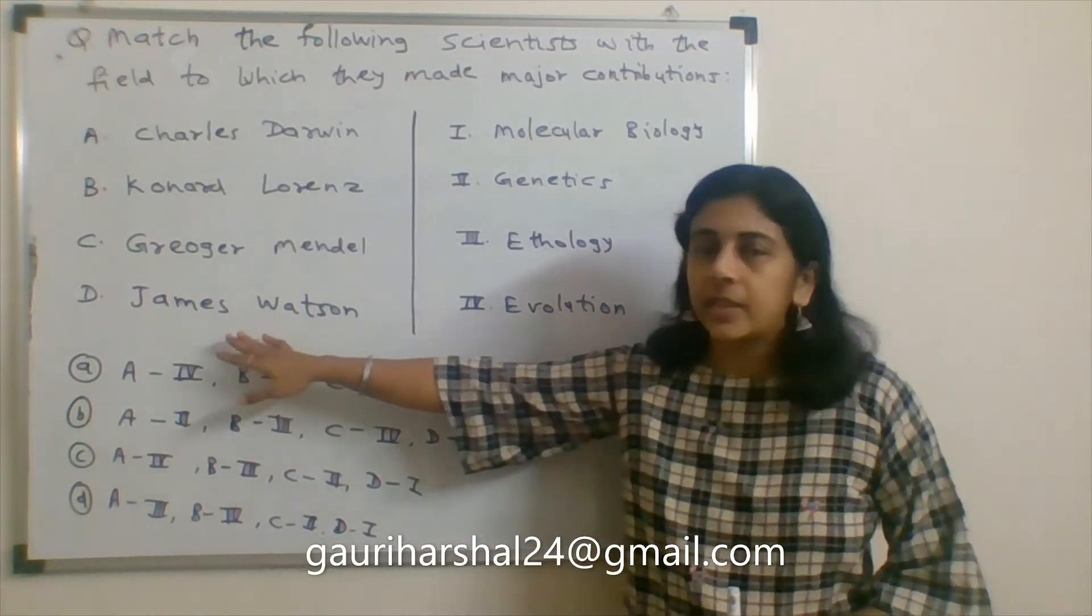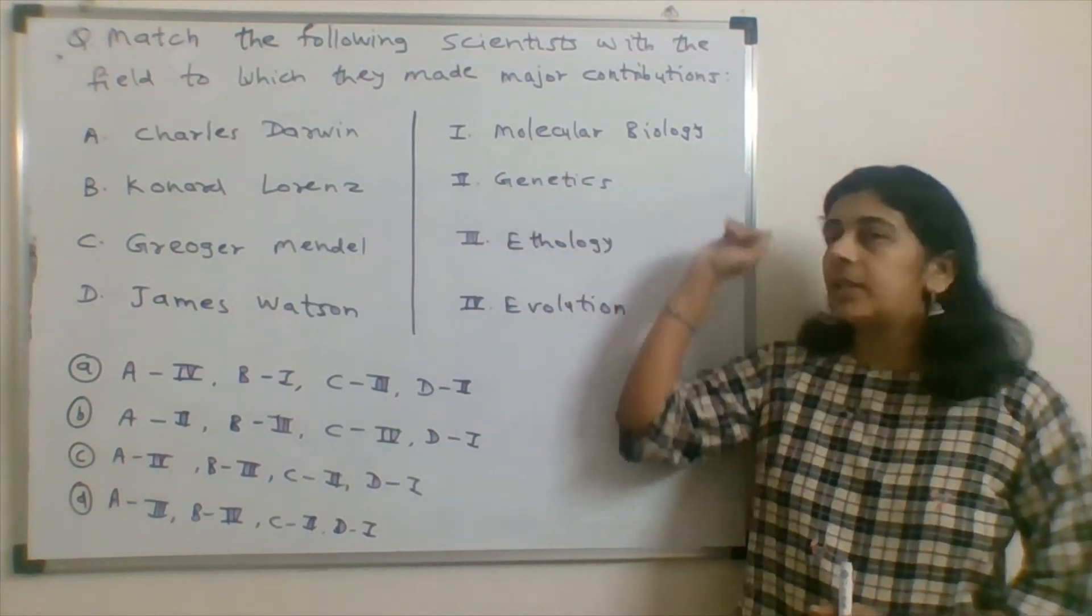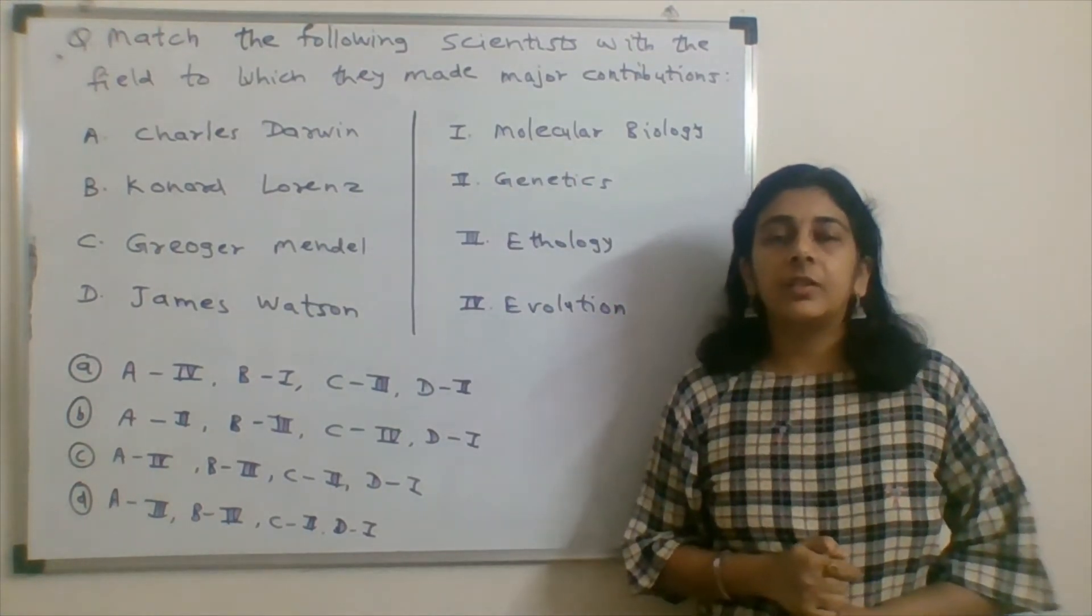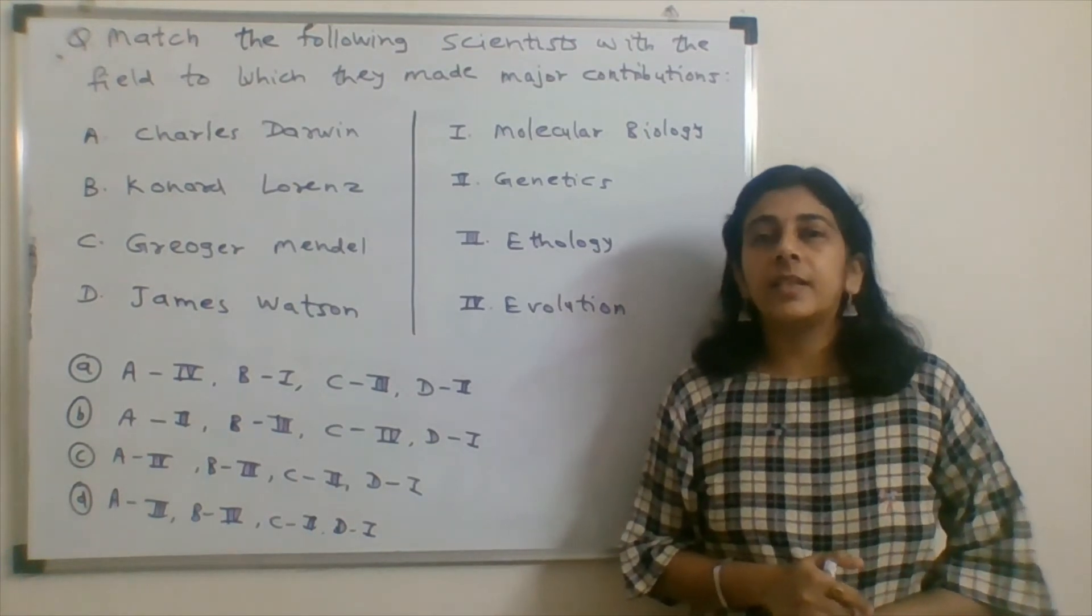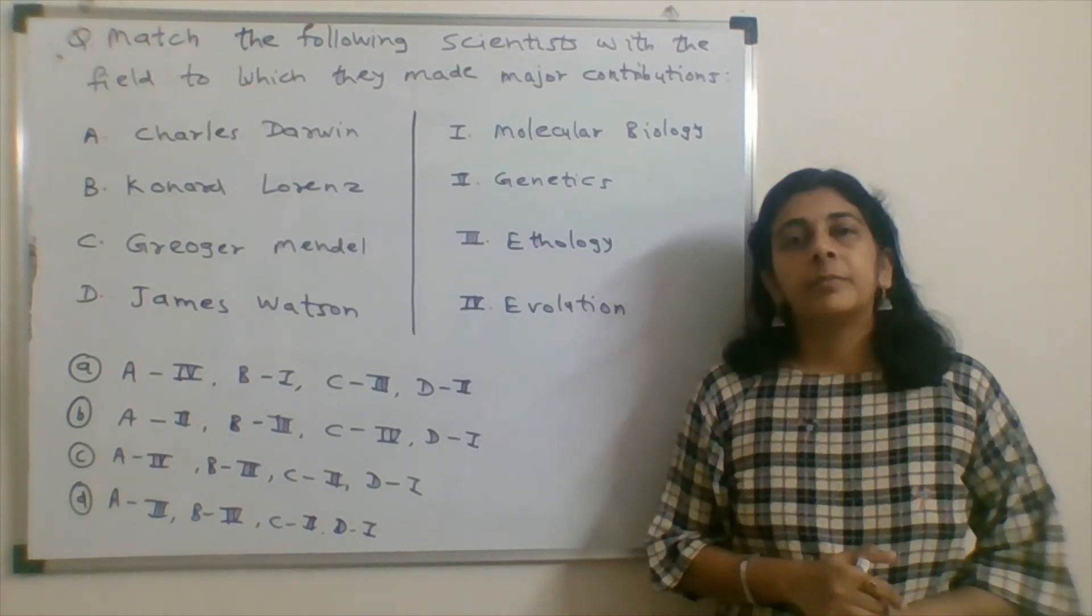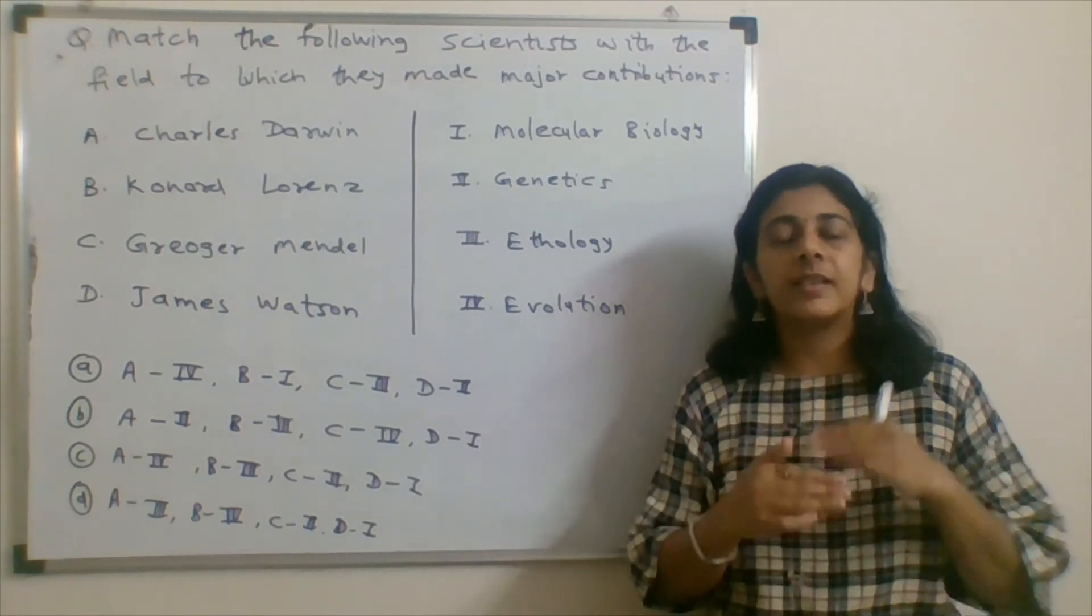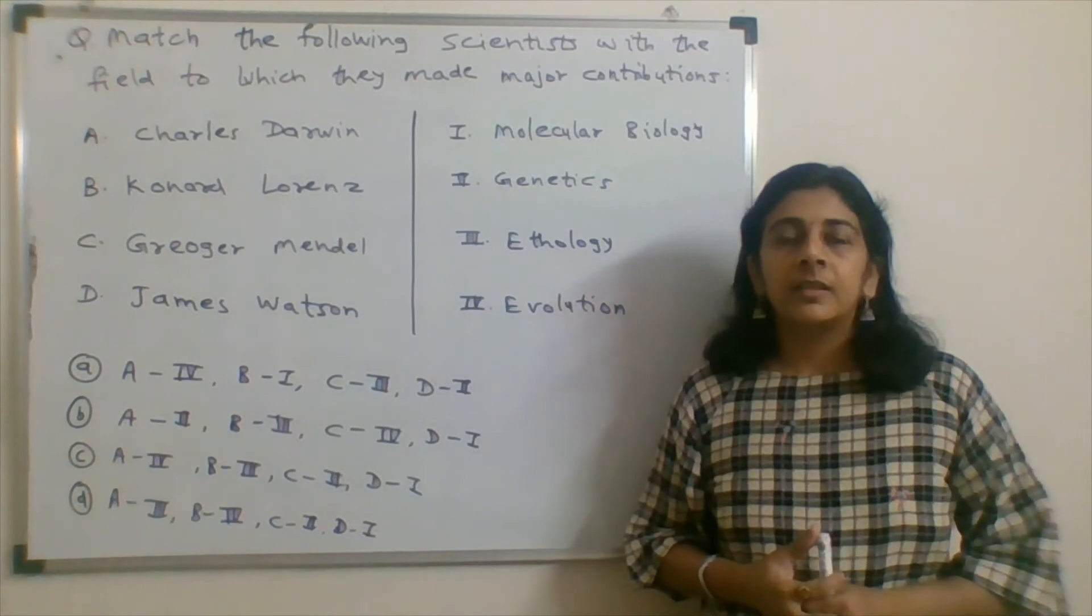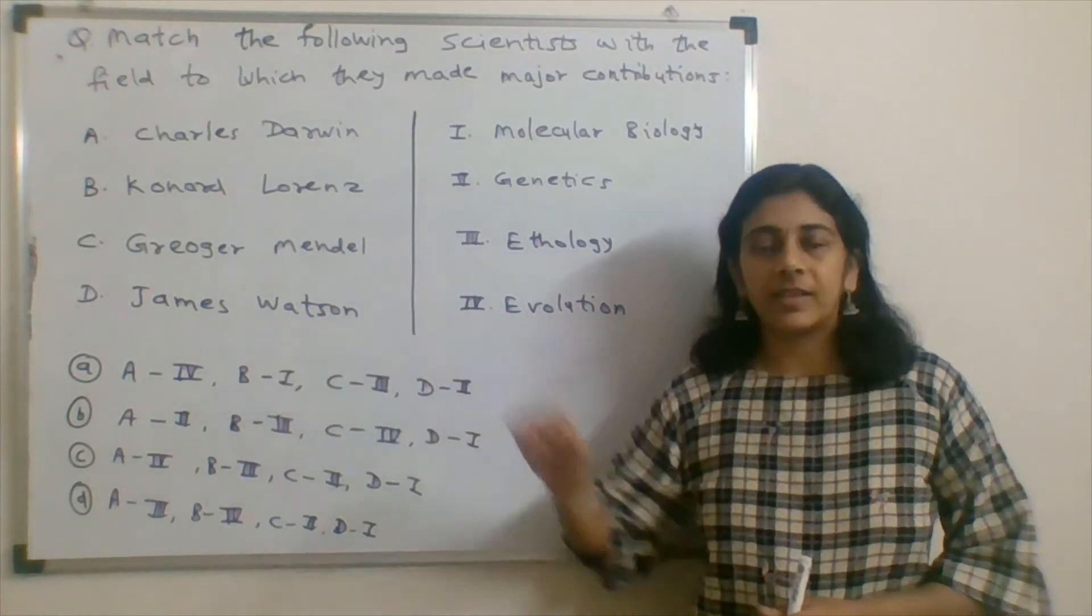The last is James Watson. It was in molecular biology. They discovered the DNA structure. The DNA is a double-stranded structure. It is a backbone of phosphate sugar. The bases are in between, stacked on each other. This structure deduced is James Watson's work.